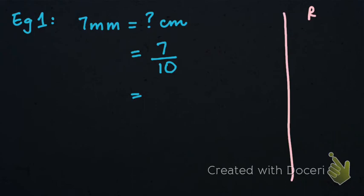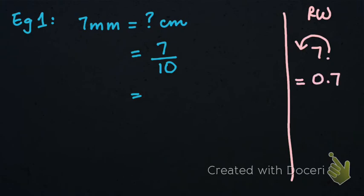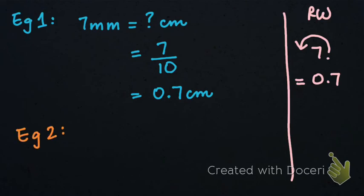When dividing by 10, we look at the decimal place. For 7, the decimal is at the end. When dividing by 10, we shift the decimal one place to the left — there is one zero — so our answer becomes 0.7. That means 7 millimeters equals 0.7 centimeters.